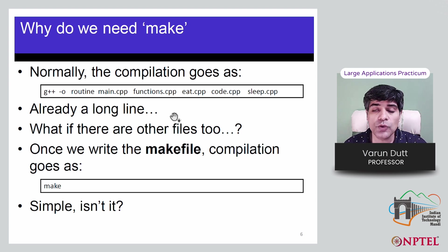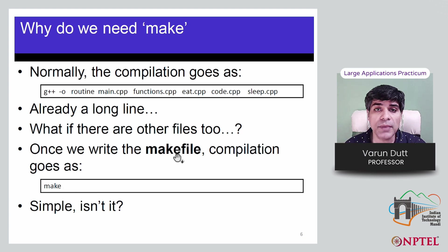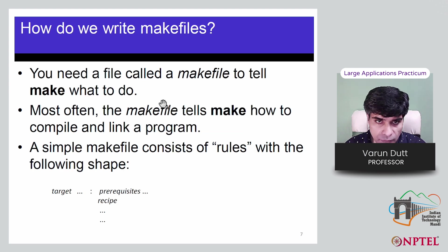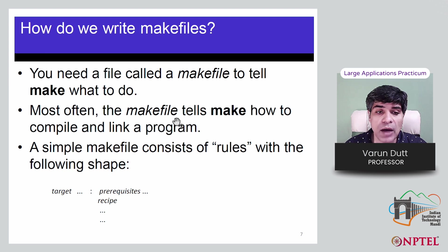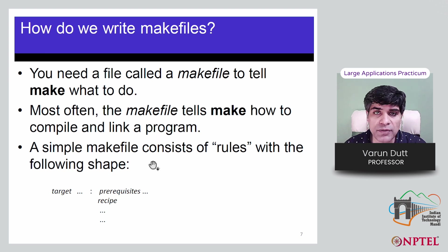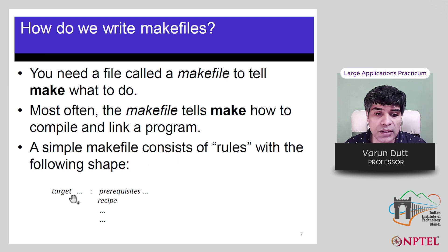The answer to this long compile command is to use the make utility, where you just run make on the command prompt rather than the g++ statement. Make will look for a makefile in the folder containing the compilation rules. A makefile tells make how to compile and link a program and what steps to execute. A makefile consists of a set of rules executed in a top-down manner.